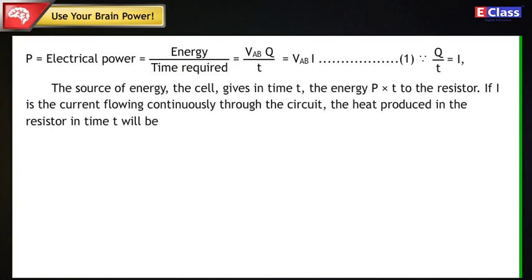The source of energy, the cell, gives in time T the energy P×T to the resistor.